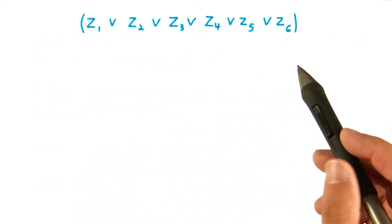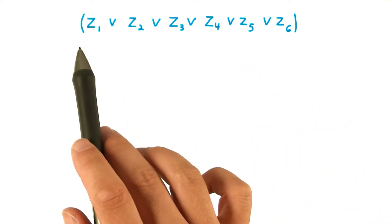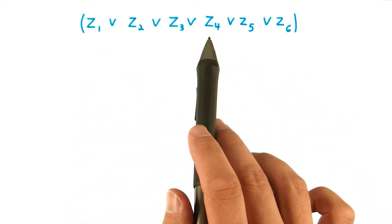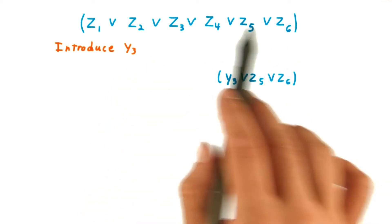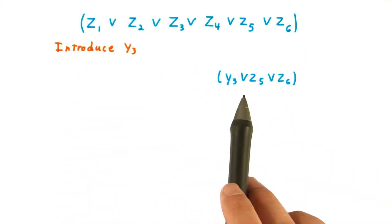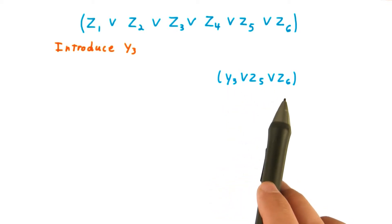Looking at this, we might wish that we could have a single variable that captured whether any of these first four literals were true. Let's call this variable Y3. Then, we could express this overall clause with just three of the literals: Y3, or Z5, or Z6.